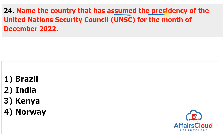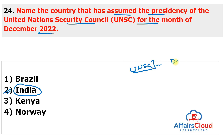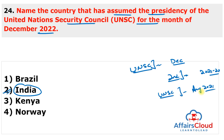Question 24: Which country assumed the presidency of the UN Security Council for December 2022? The answer is India. India assumed the UNSC presidency for December 2022 — the second time in its two-year tenure as an elected member (2021–22). India had earlier assumed the UNSC presidency in August 2021. During India's presidency, two high-level signature events were held on 14th and 15th December 2022 on reformed multilateralism, chaired by External Affairs Minister S. Jaishankar.